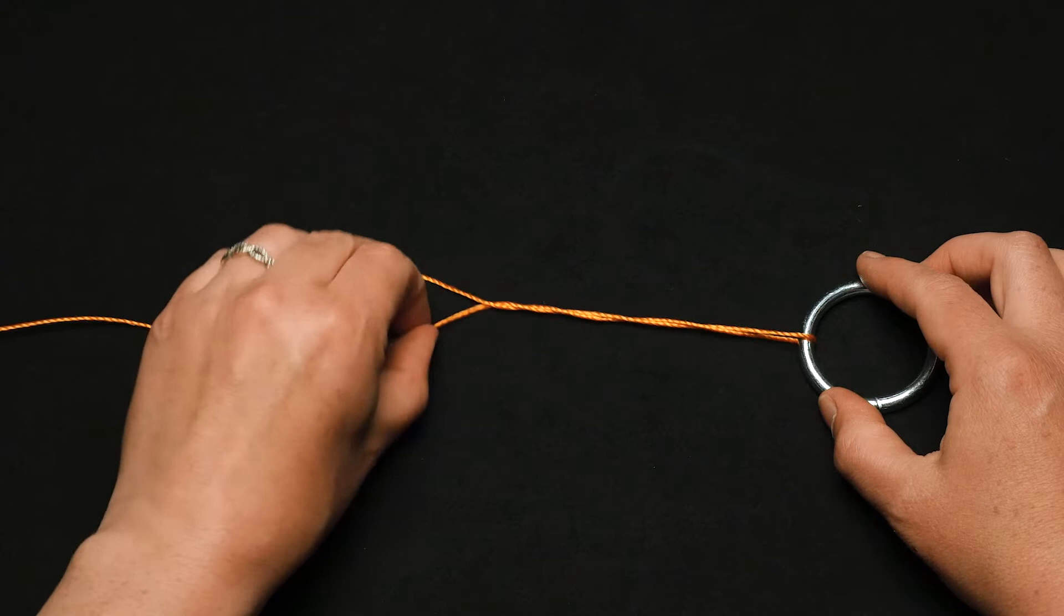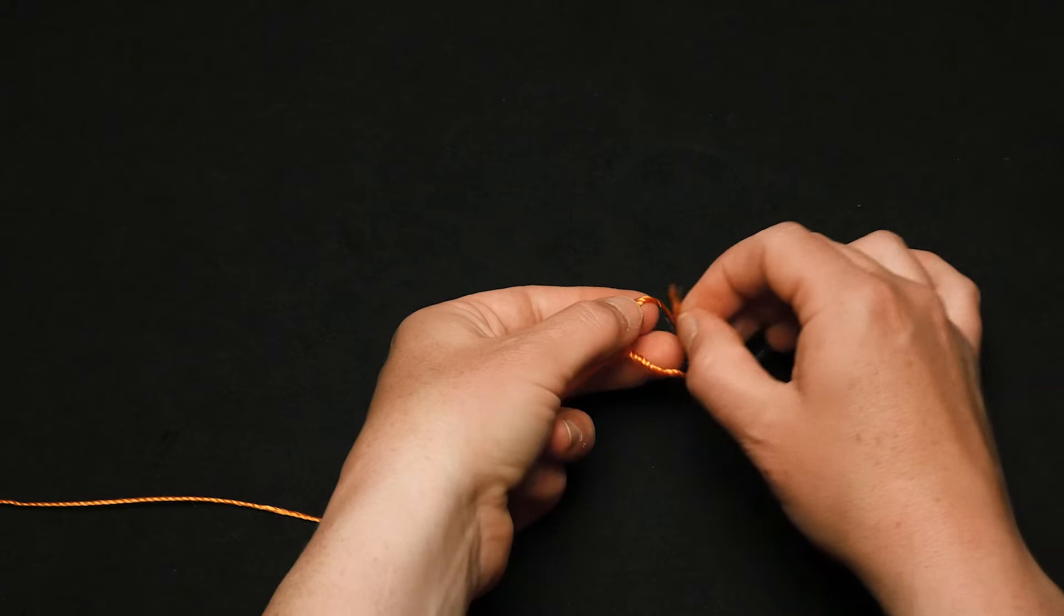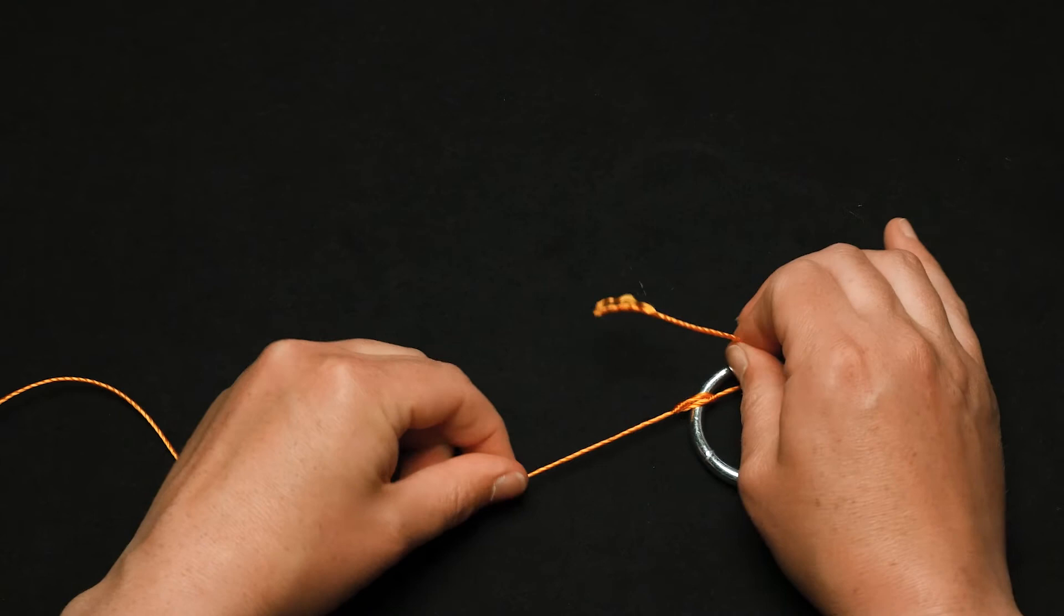Bring the end of the line through the first loop formed behind the eye, then pull through the bigger loop. Pull on the standing line to form a knot with coils. Slide the coil tightly against the eye and cut the tag end.